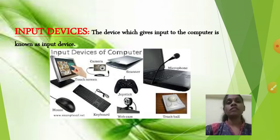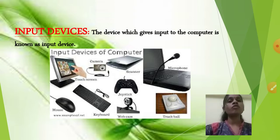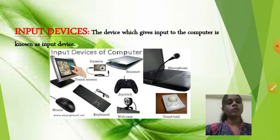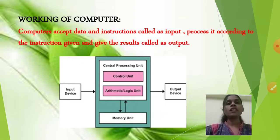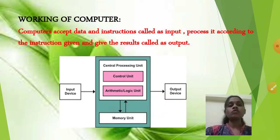So the first topic — input device — is completed. The working of a computer consists of input device, CPU, and output device. I hope you understood what input devices are: the devices through which input goes inside the computer. Now let me explain how the computer works.